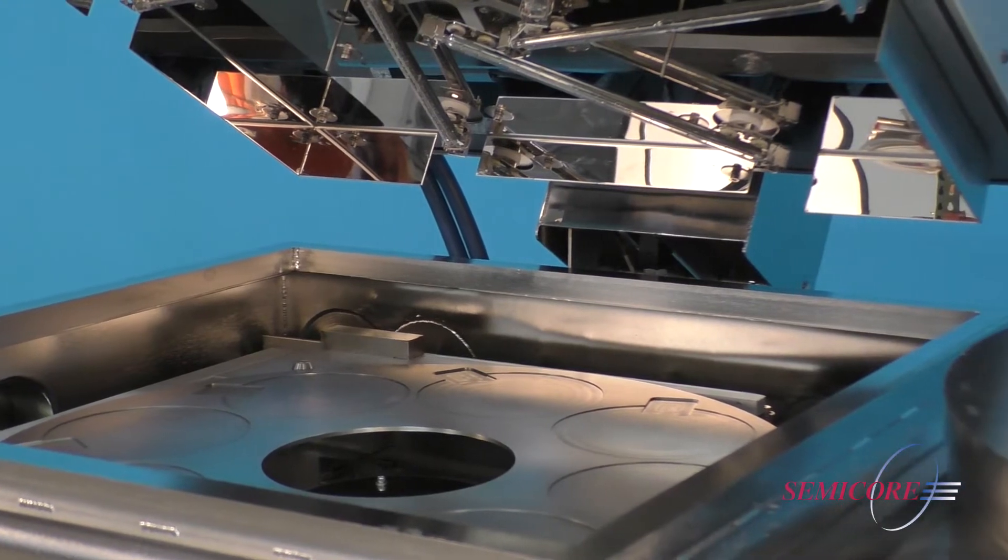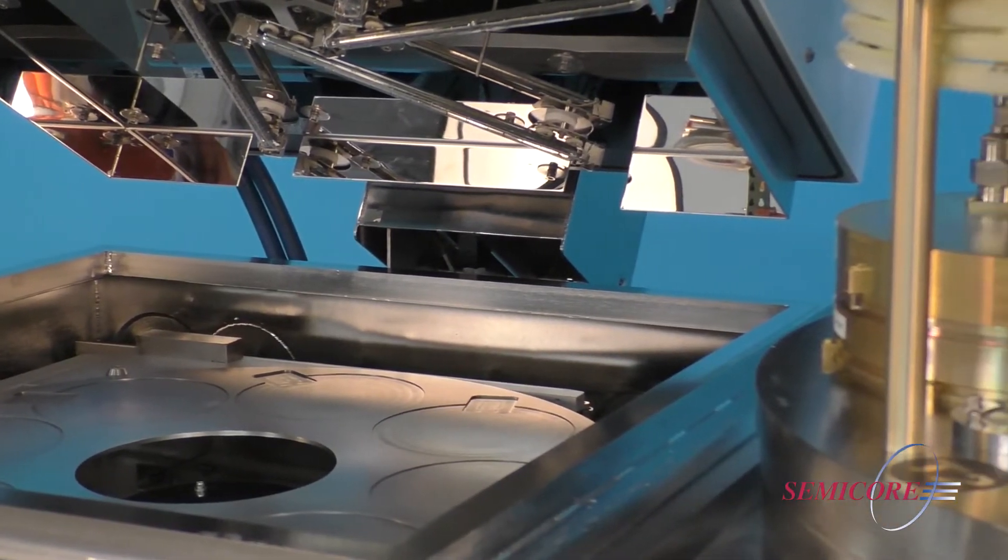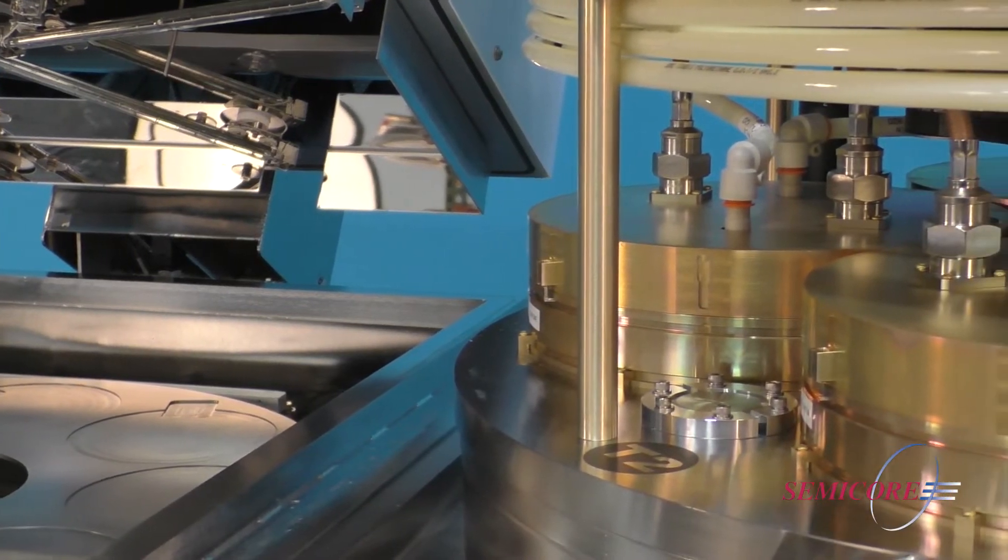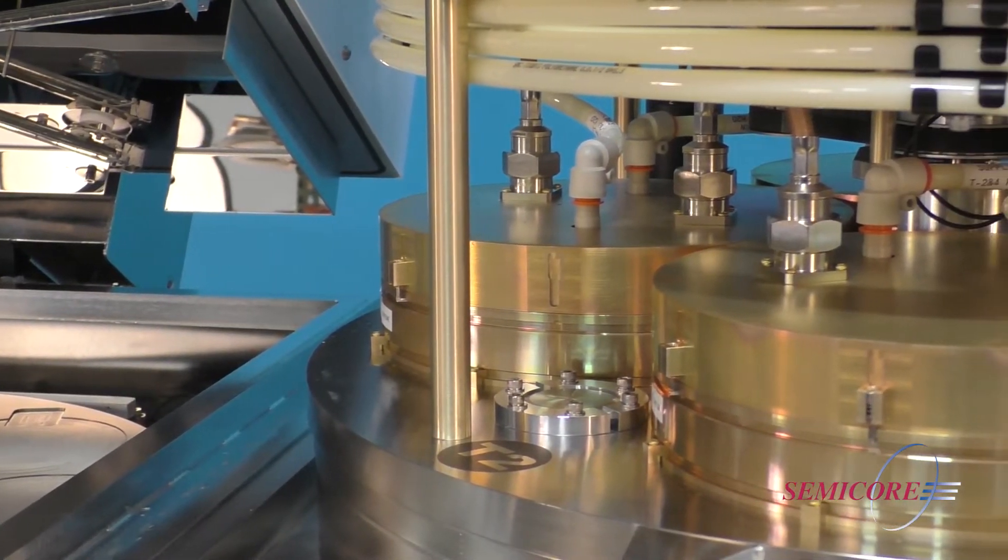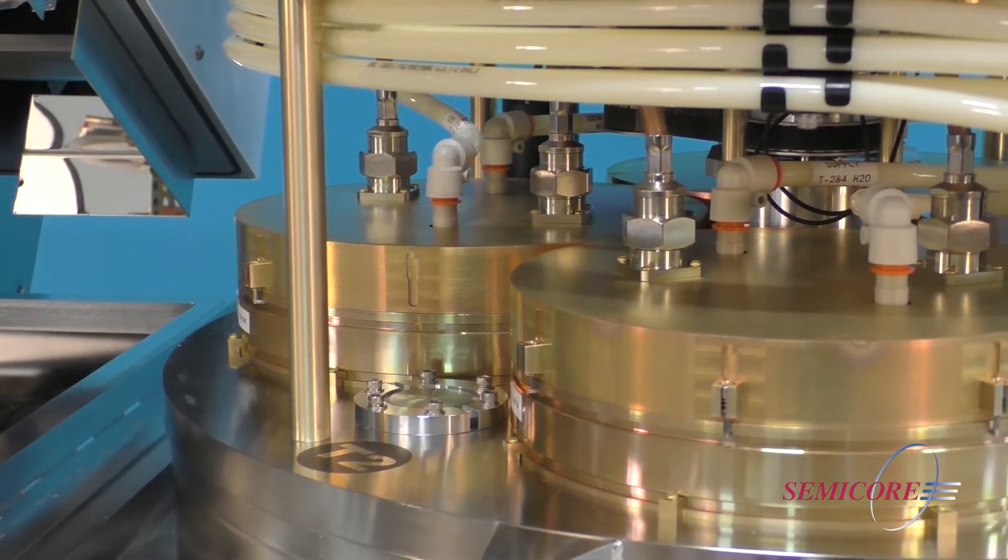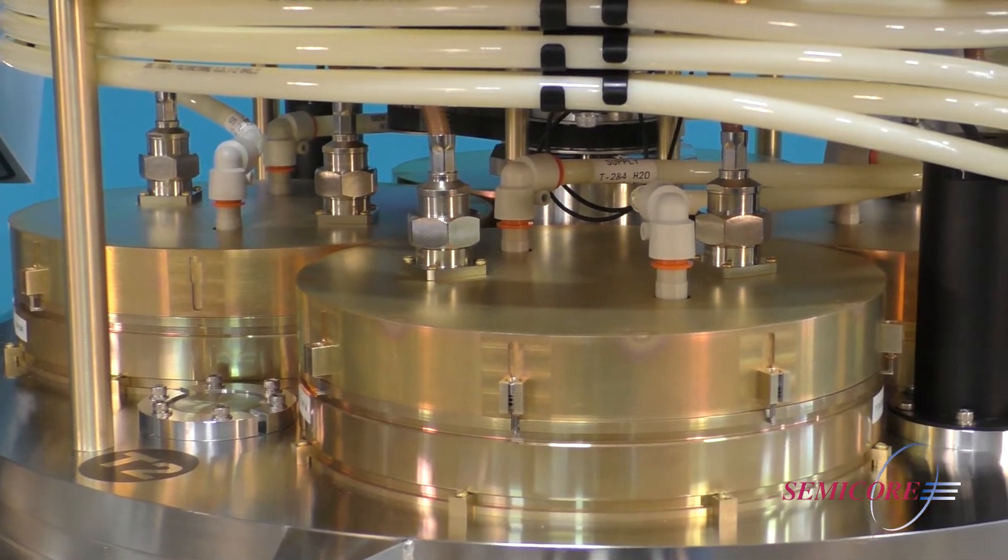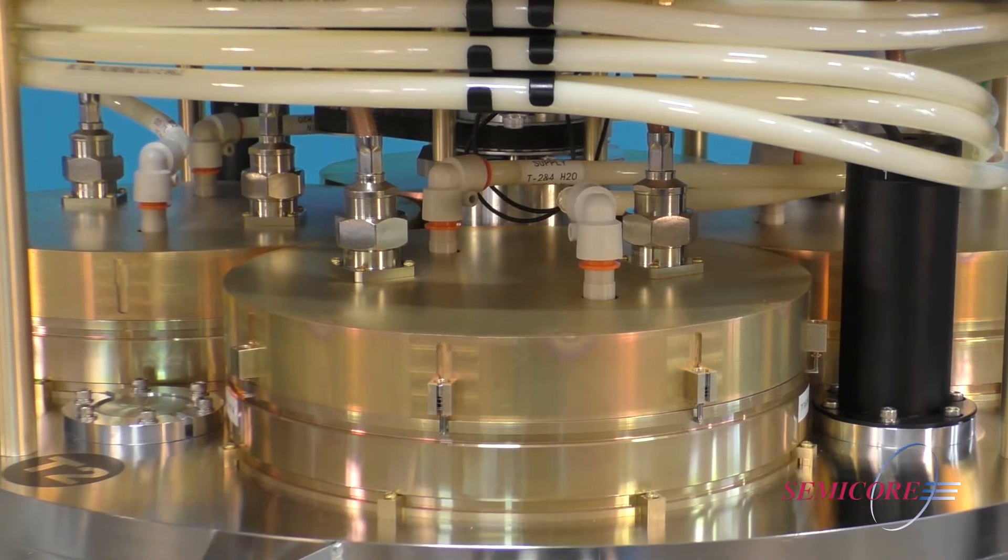The Perkinelmer 4400 series is a dual-chamber, fast-cycle load lock system that utilizes up to four water-cooled cathodes, which can be configured for RF or DC magnetron, RF diode, reactive sputtering, as well as co-sputtering.